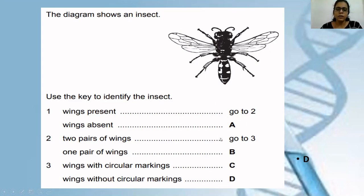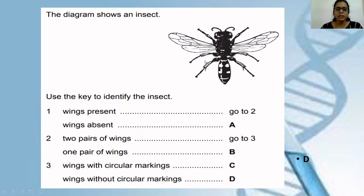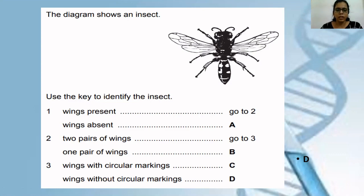This is how you are supposed to use a dichotomous key. At every step — one, two, and three — at every point, two choices are given to the user. These two choices are based on the characteristic or feature of the organism, and you just have to match and choose the correct characteristic or feature for the organism.